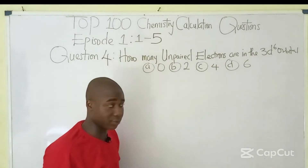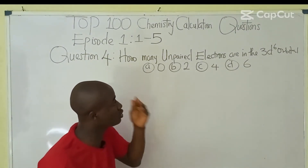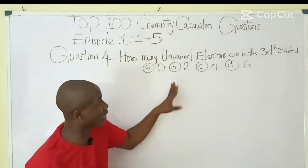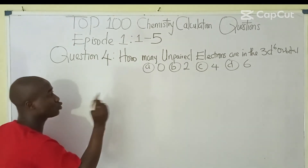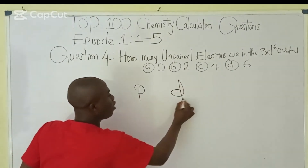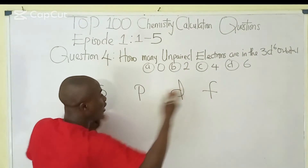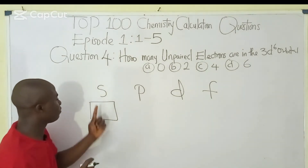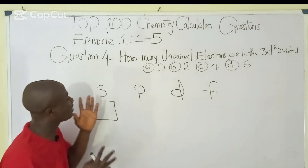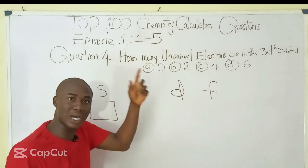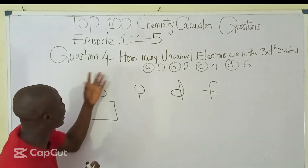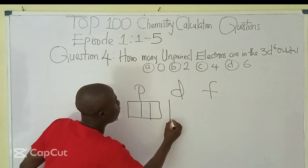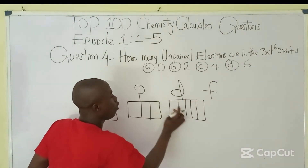Let's get to the fourth question: how many unpaired electrons are in the 3D6 orbital? It must be noted that we have various orbitals — S, P, D, F, G, H. For the S orbital we draw 1 box, for P we draw 3 boxes, for D we draw 5 boxes, and for F we draw 7 boxes.